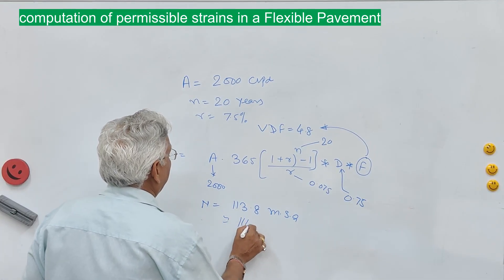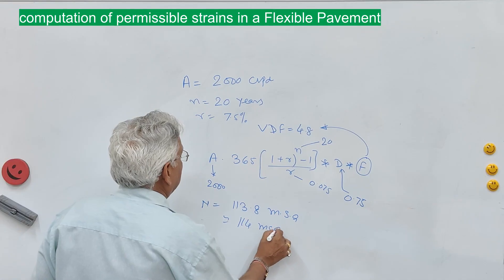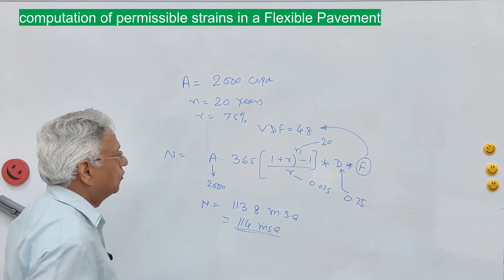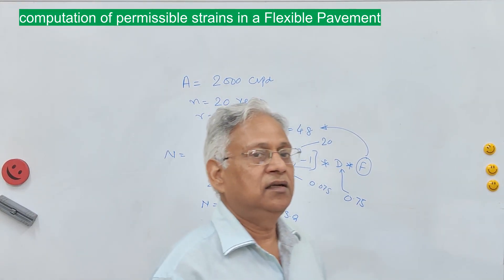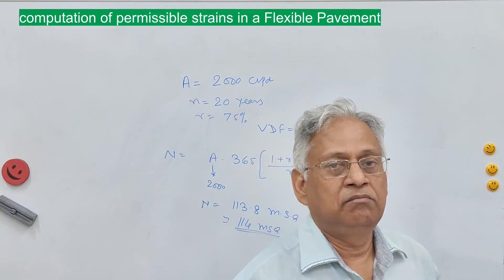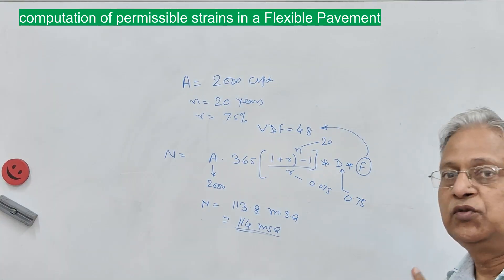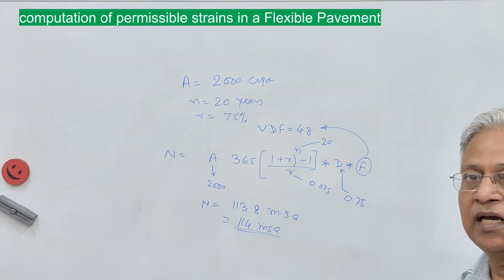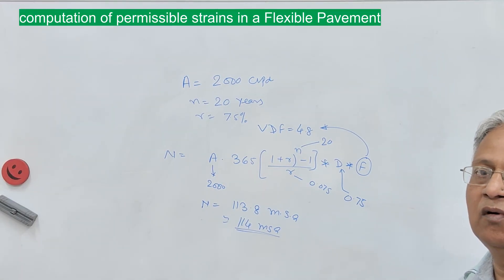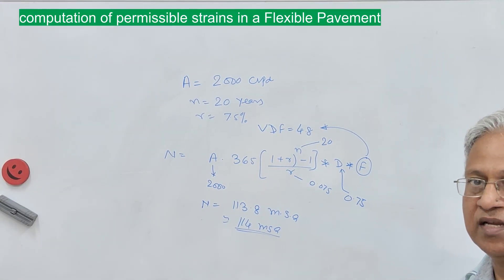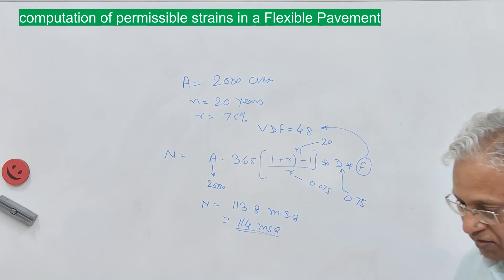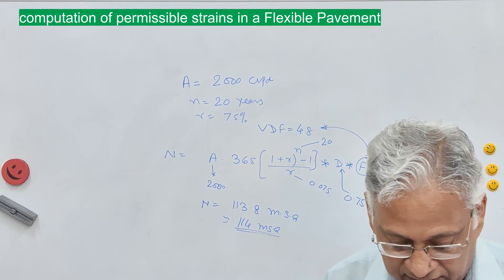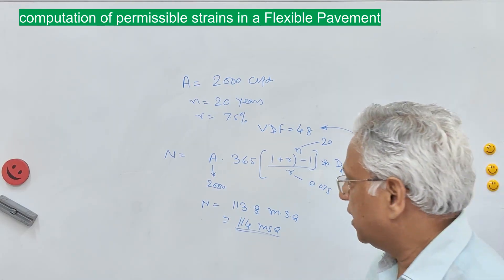Putting all these values into the equation gives N = 113.8 million standard axles, let us say 114 MSA. So the design traffic for this highway is 114 million standard axles. Using this traffic, we should now calculate the permissible values of strains.